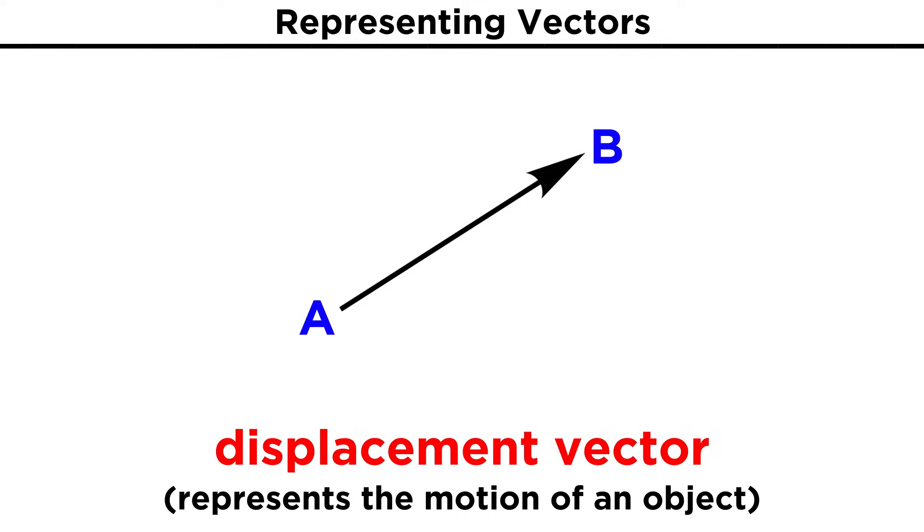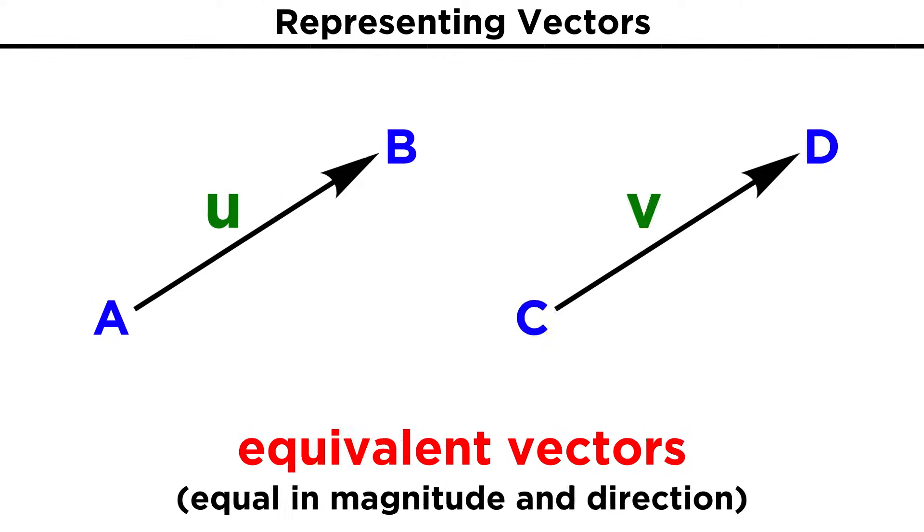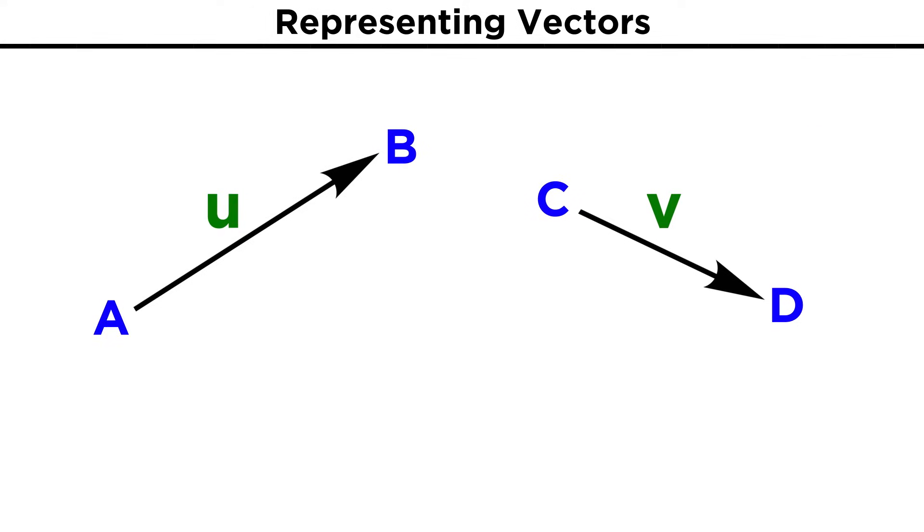If such a vector connects two points, like A and B, we can call this vector AB, with a little arrow over it. That's one way to represent a vector. We can also just refer to a vector with a letter, like U. Different vectors with the same magnitude and direction are called equivalent vectors. But of course, vectors can have different magnitudes and directions, and we can manipulate and combine vectors in various ways.